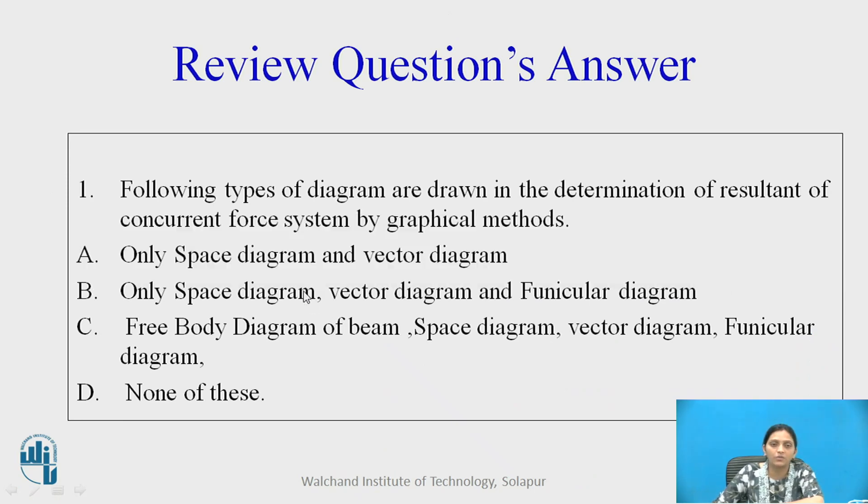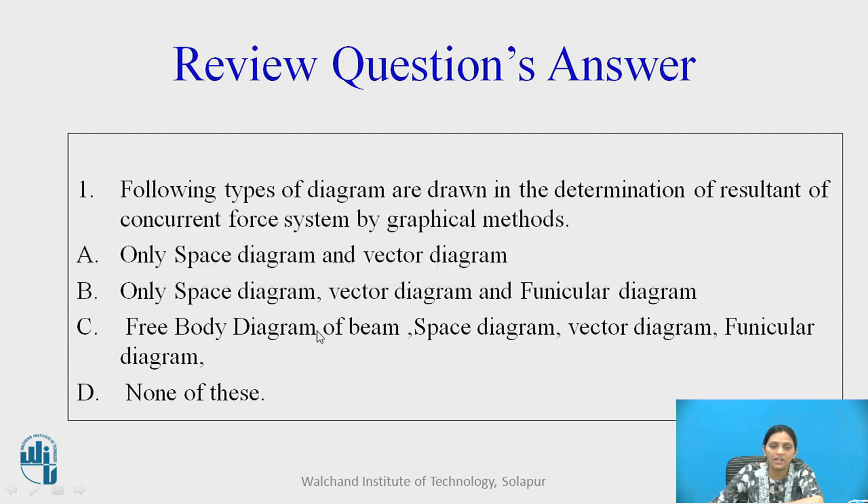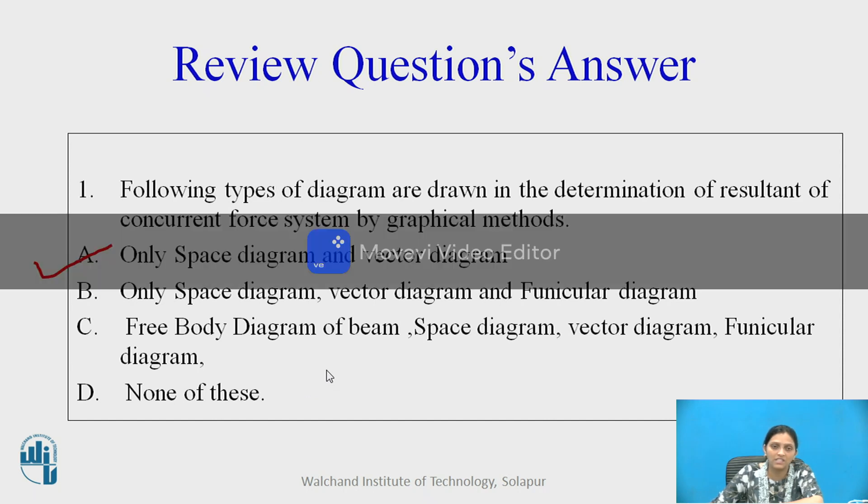Now, answer the question. Following types of diagram are drawn in the determination of resultant of concurrent force system by graphical method. Option A is only space diagram and vector diagram. Option B is only space diagram, vector diagram and funicular diagram. Option C is free body diagram, space diagram, vector diagram and funicular diagram. Option D is none of these. Correct option is only space diagram and the vector diagram. Option A is correct.